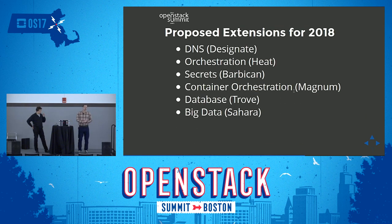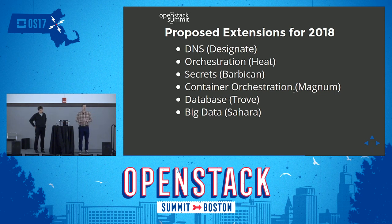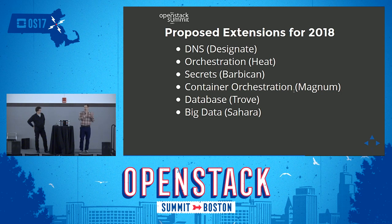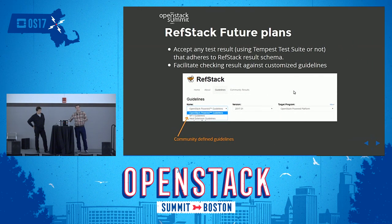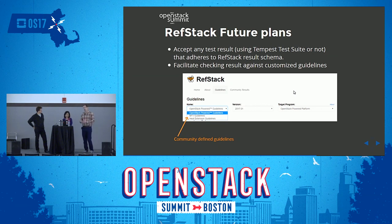We also have a number of proposed extensions — trademarks that are going to be applied to existing OpenStack Powered clouds. These include DNS with Designate, orchestration with Heat, secrets with Barbican, container orchestration with Magnum, database with Trove, and big data with Sahara. These are just some of the extension programs we're looking at adding onto existing OpenStack Powered products. With that, I'll turn it back over to Catherine to describe how RefStack is going to integrate with these new extensions and programs.